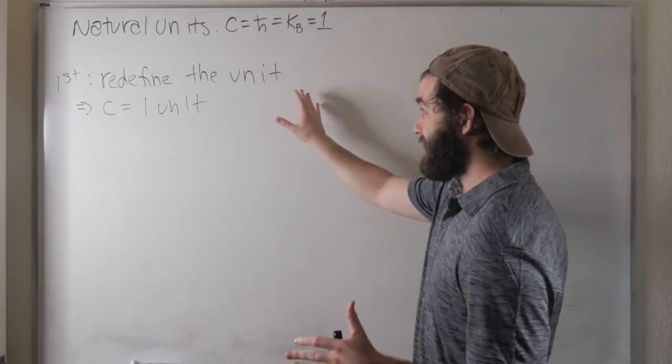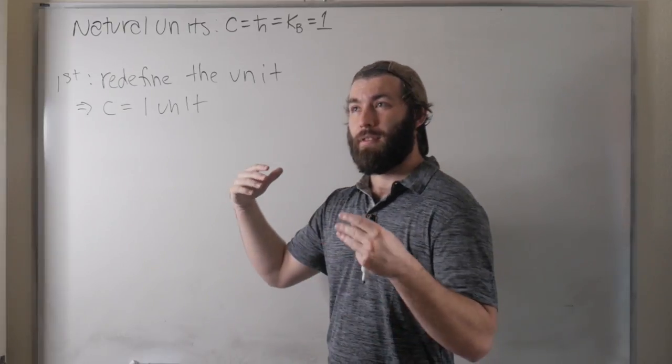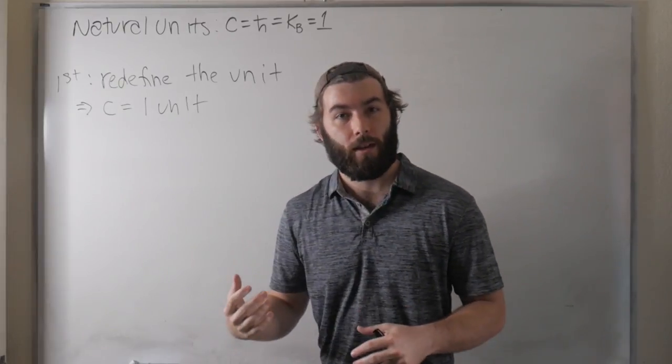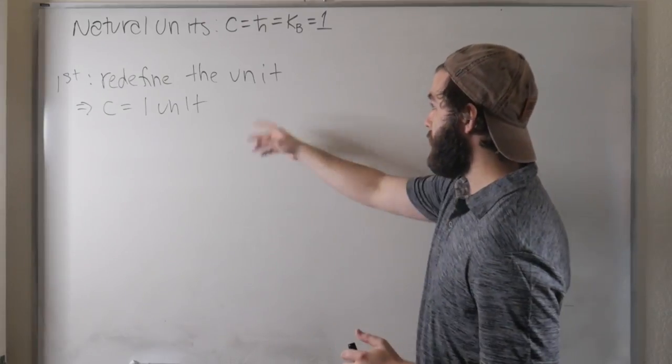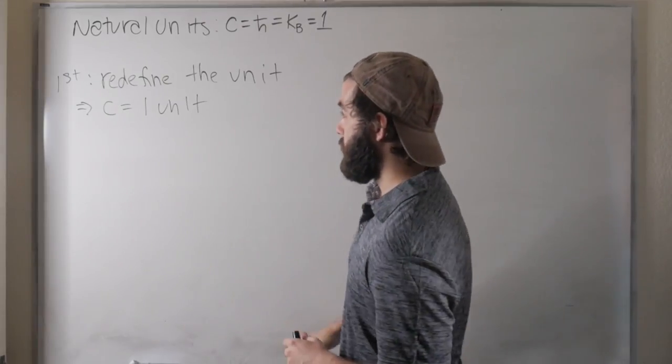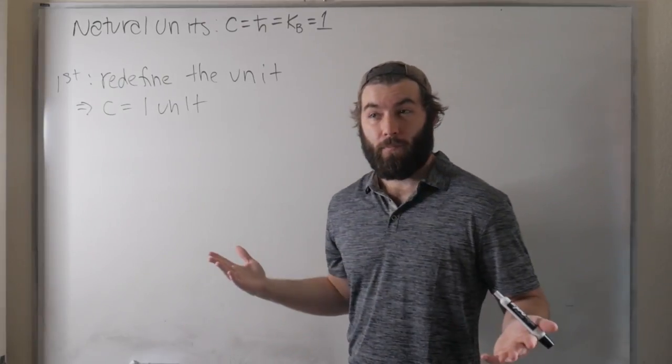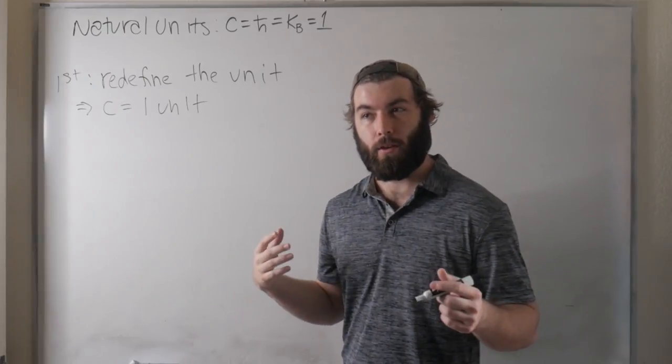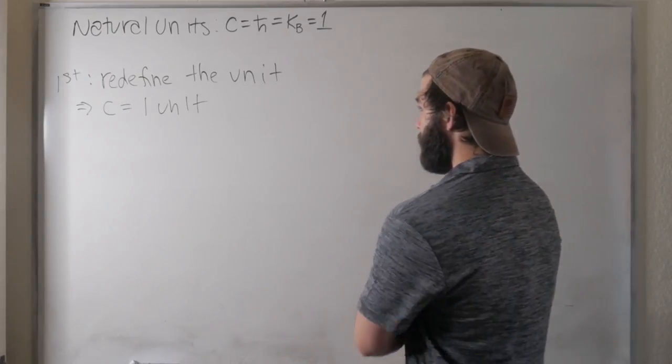So in practice, this is fine. This is usually not the conventional way of doing it, but it is a method that I've seen. It's just redefine the unit, c equal to one of that unit, which is probably the more intuitive version, or intuitive way of normalizing it.